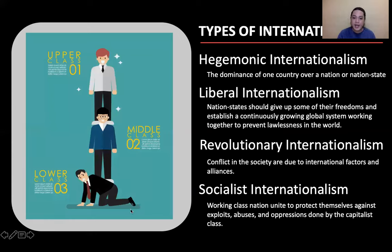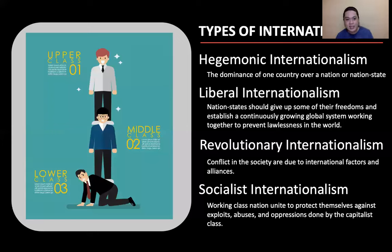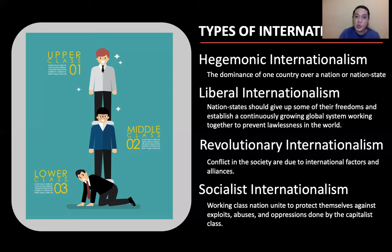Socialist internationalism is where working-class nations unite to protect themselves against exploitation, abuses, and oppressions done by the capitalist class. Due to socialist internationalism, social classes have been created — lower, middle, and upper class — and working classes try to eradicate or erase the exploitations and abuses committed by capitalist classes.